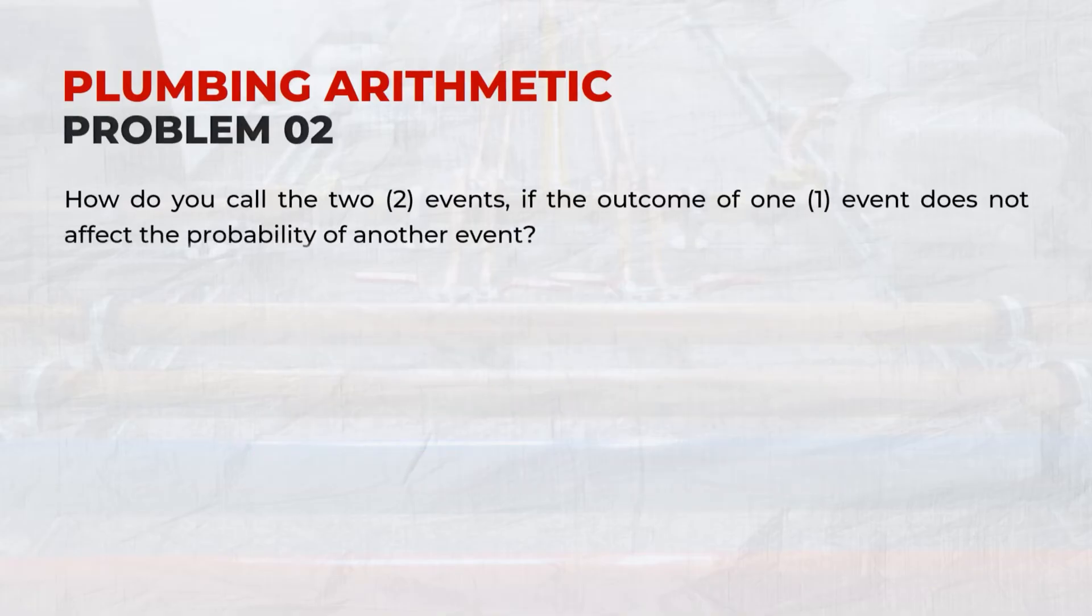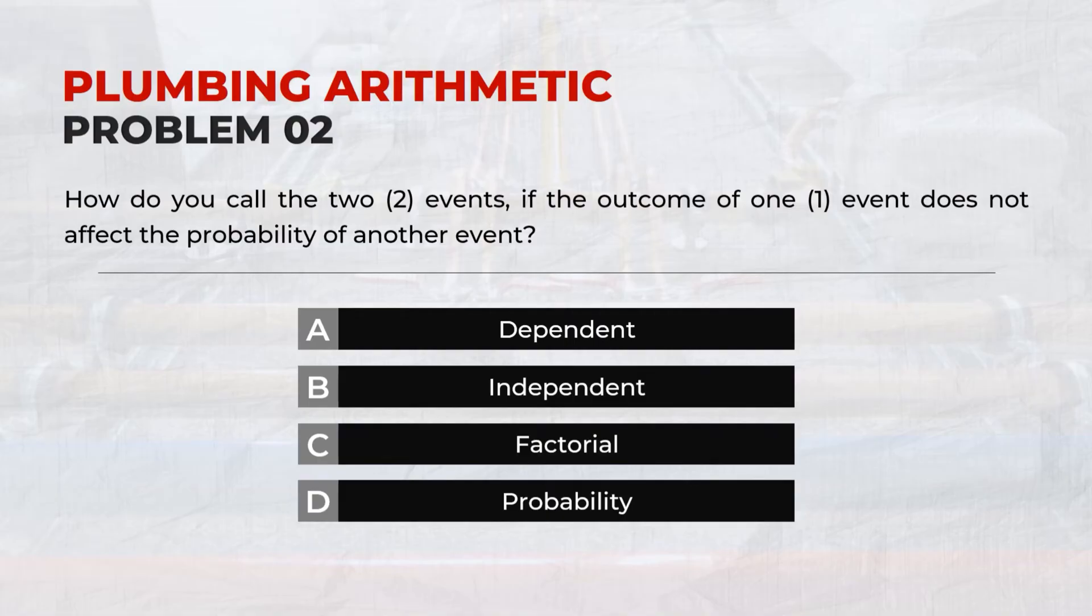How do you call the two events if the outcome of one event does not affect the probability of another event? B, Independent.